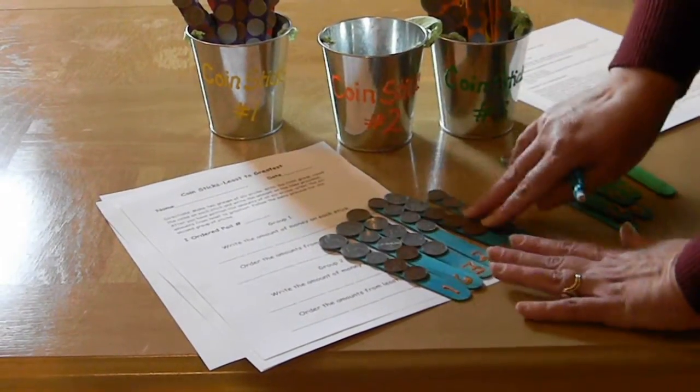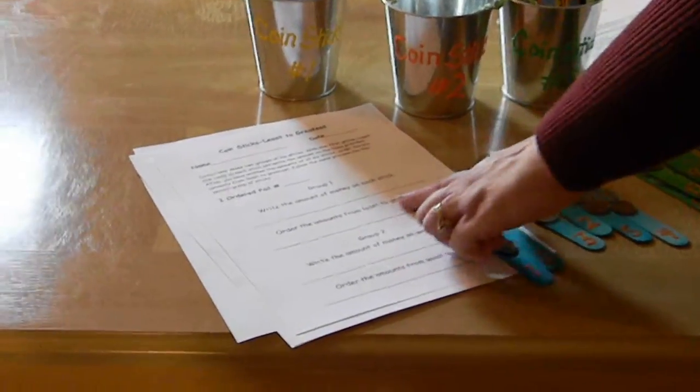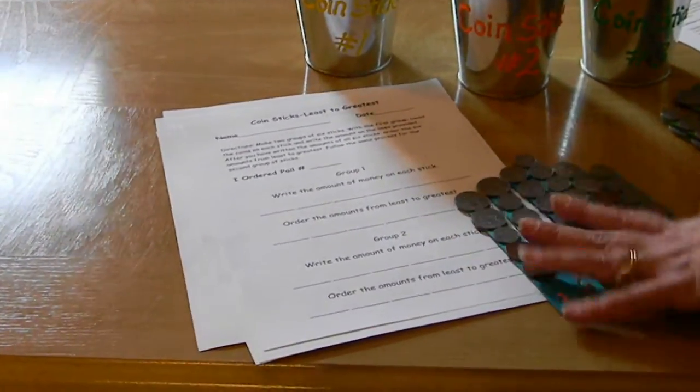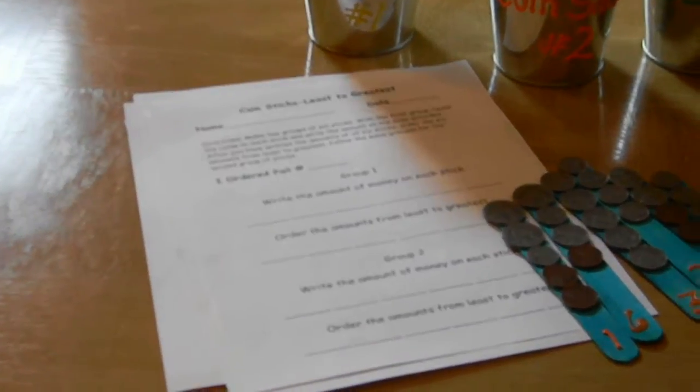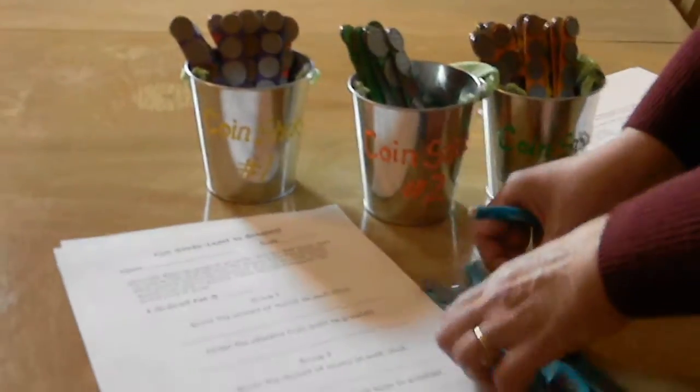And then on the next line then they would order the amounts from least to greatest and they would do that with the first set and then they would do that with the second set so there's several activities that could be done.